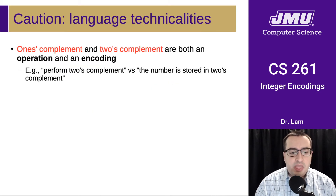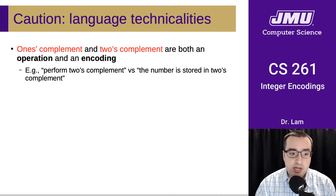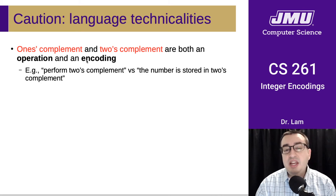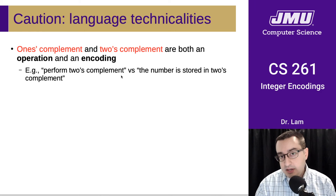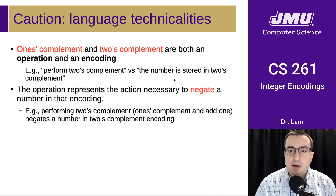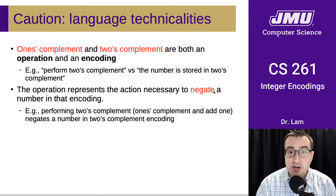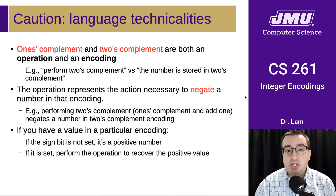Another technicality you may run into if you're looking for supplementary help online is that one's complement and two's complement are both an encoding and an operation. People will sometimes talk about performing two's complement versus a number being stored in two's complement, which is slightly confusing. The thing that links the two is that the two's complement operation represents the action necessary to negate a number in two's complement encoding.